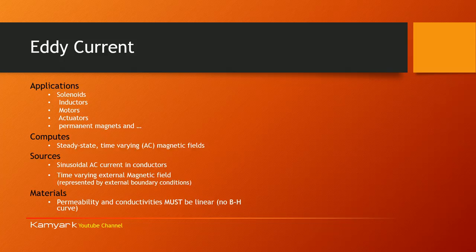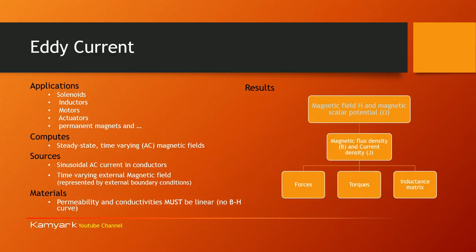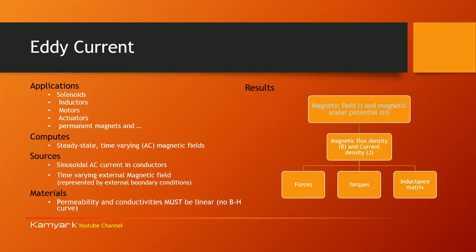If you are looking at high-frequency AC simulations, you have to stick with Eddy Current. The results from this simulation type are the magnetic field H and the magnetic scalar potential omega. AnSoft then automatically computes magnetic flux density B and current density J. If requested, it will also give you forces, energies, torques, and the inductance.